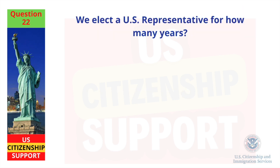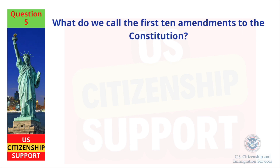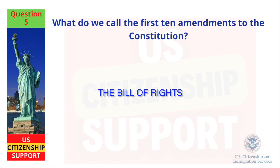We elect a U.S. representative for how many years? Two. What does the judicial branch do? What do we call the first ten amendments to the Constitution? The Bill of Rights.